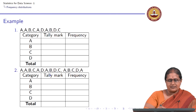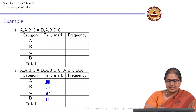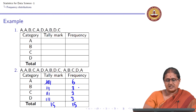Looking at the second example, I do the tally marks more quickly: A, A, B, C, A, D, A, B, D, C, then B, C, D, A. When I have more than 4 tallies, I cross out the fifth value. This gives me 5 plus 1, a value of 6 for A. The result is: category A occurs 6 times, B occurs 3 times, C occurs 3 times, and D occurs 3 times, for a total of 15 observations.